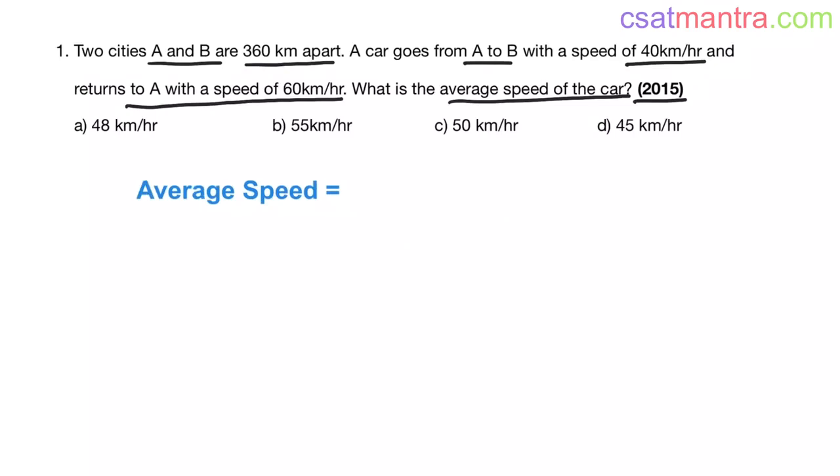Now tell me, what is the average speed? Is it the average of speeds? In that case, the answer to our question is 40 plus 60 by 2, that equals 100 by 2, that equals 50. So C should be your answer.